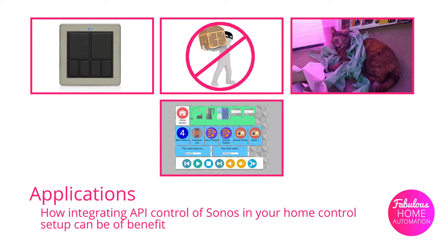There are a few reasons why you might want to control Sonos directly through your home control system via HTTP commands. The first is that you can connect Sonos to wall controls. As long as your home control system — for us it's Domoticz — can detect these switches, you can convert those signals into processing commands for Sonos. As an example, we use one in the bathroom to control the audio for the shower speaker.